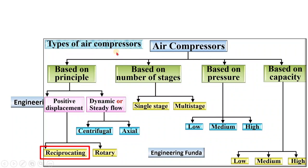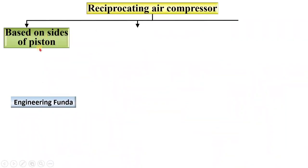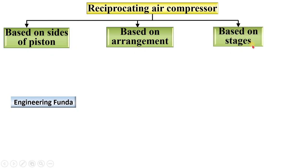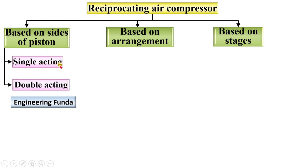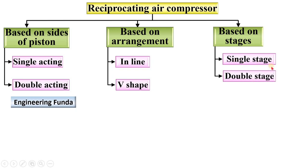Reciprocating compressors are further classified based on sides of piston, arrangement, and stages. Based on sides of piston: single acting and double acting. Based on arrangement: inline and V-shape. Based on stages: single stage, double stage, and multi-stage compressor.